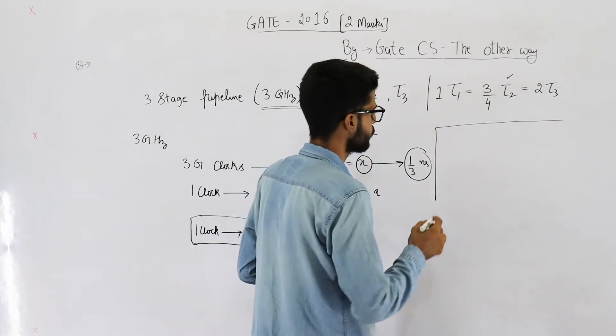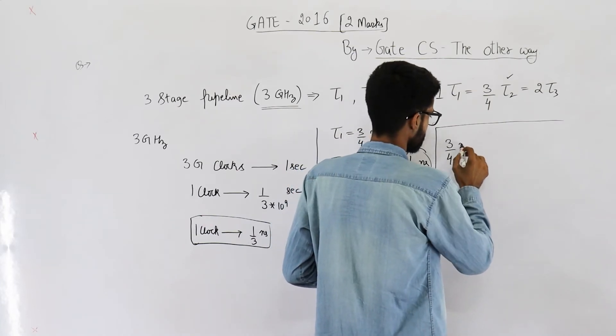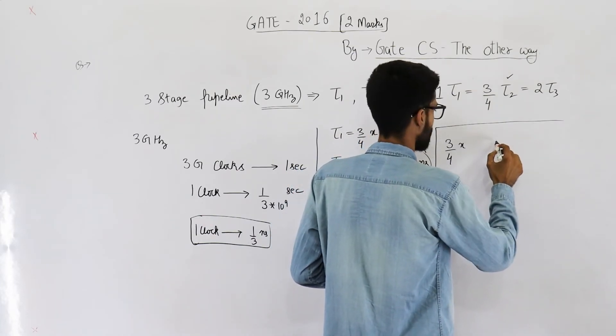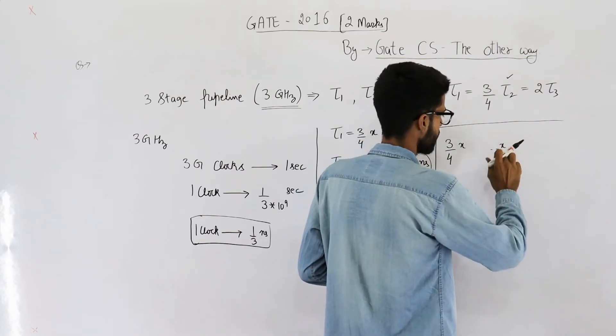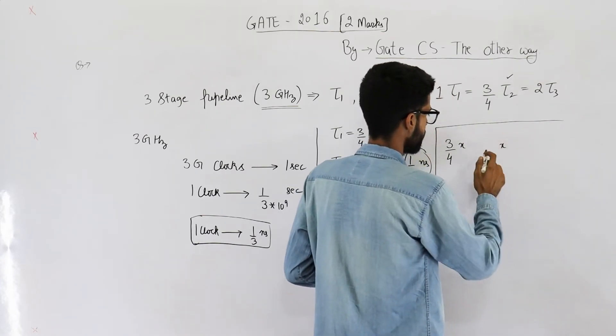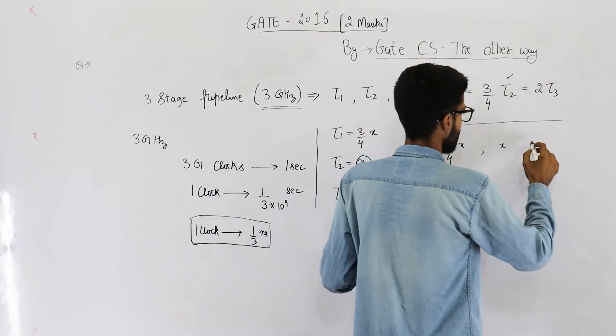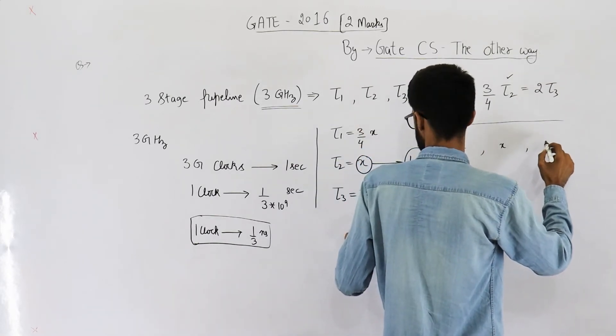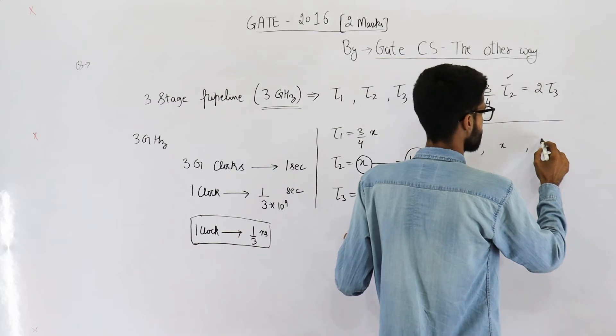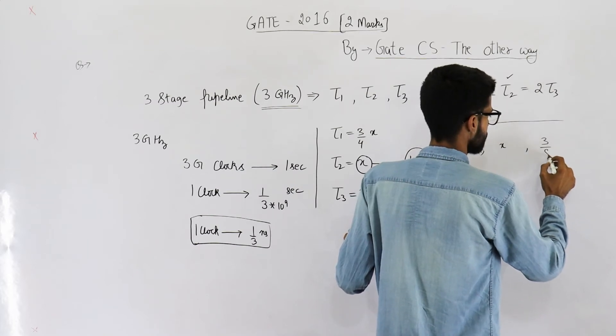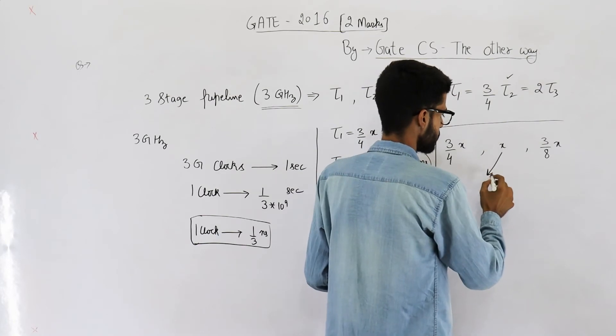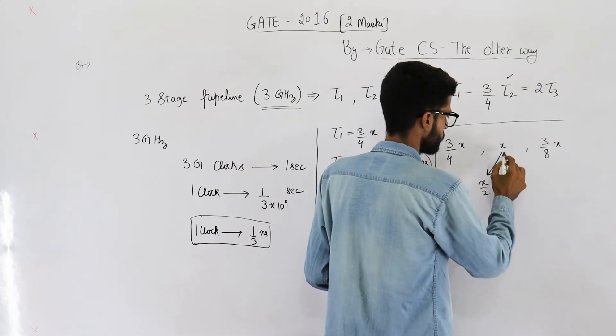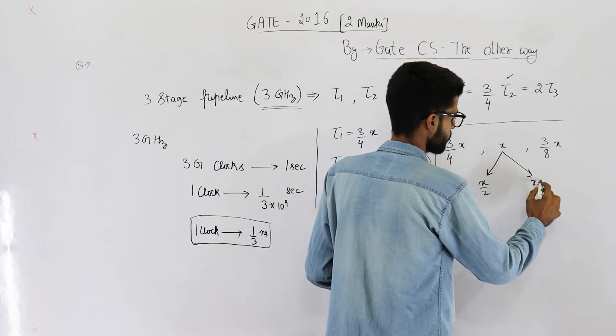So, let me just draw it here. Tau1 is 3 by 4x. Tau2 is 1 by 3x. Sorry, tau2 is only x. And x we have already found out to be 1 by 3. And tau3 is 3 by 8x. This one is largest stage, so it is split into x by 2 and x by 2.